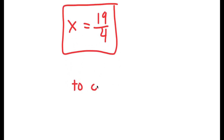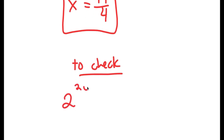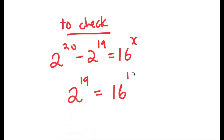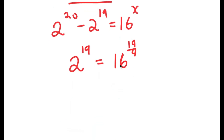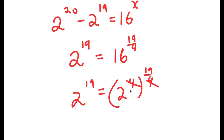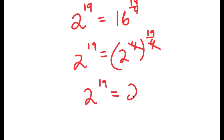Now to check: my original equation was 2 to the power of 20 minus 2 to the power of 19 is equal to 16 to the power of x. We already know that 2 to the power of 20 minus 2 to the power of 19 equals 2 to the power of 19. So we get 2 to the power of 19 is equal to 16 to the power of 19 over 4. Now 16 is 2 to the power of 4, so I have 2 to the power of 4 to the power of 19 over 4, and the two 4s cancel out, giving 2 to the power of 19 equals 2 to the power of 19. ✓